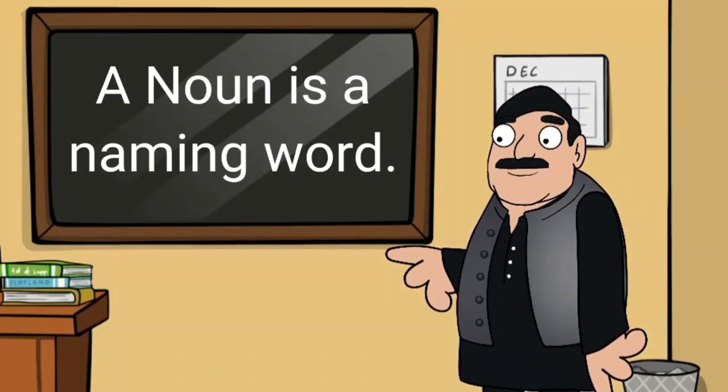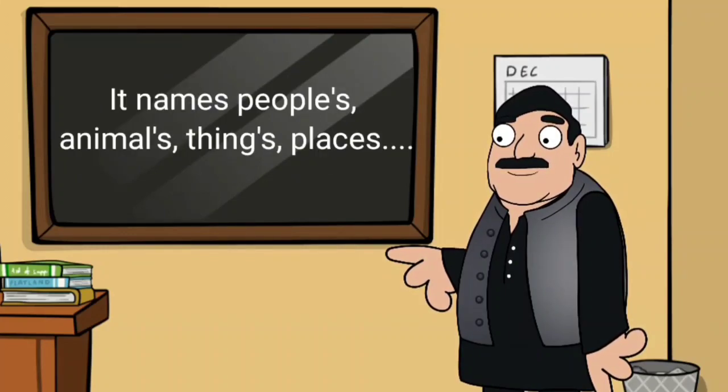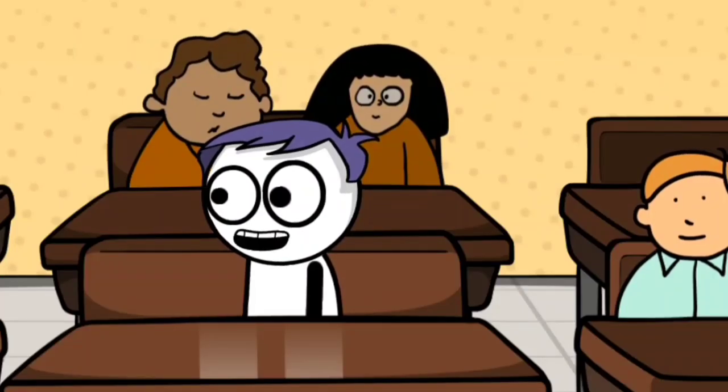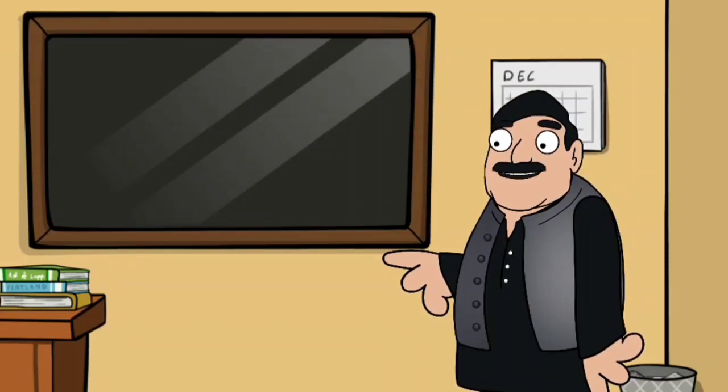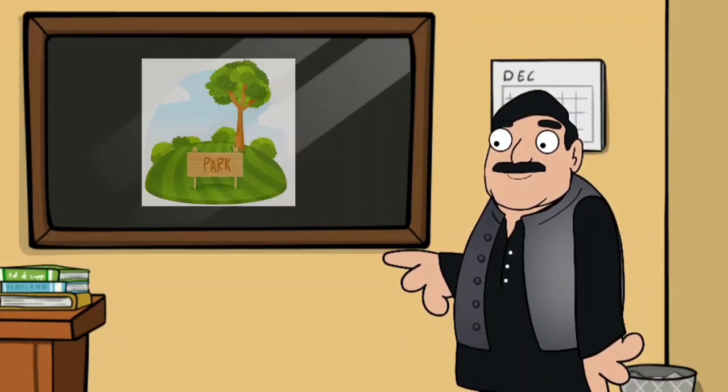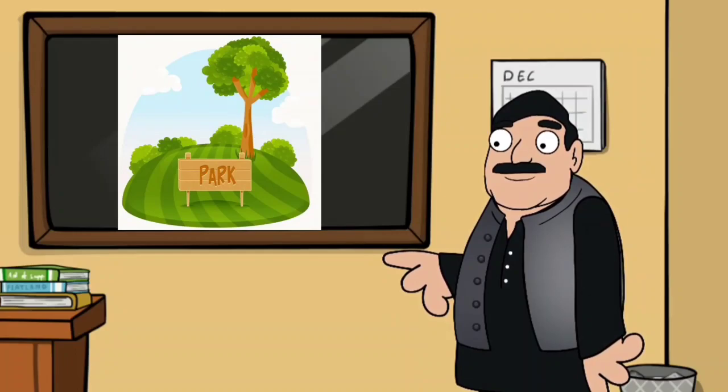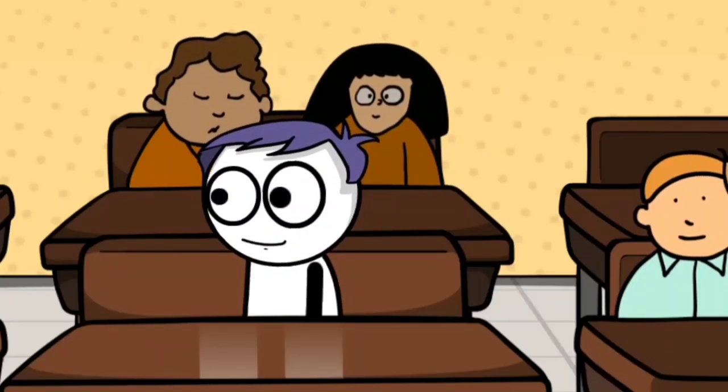That's right. A noun is a naming word. It names people, animals, things, places. Places? Yes. For example, park. Park is a name of a place. It's a noun. So, nouns are the names of people, animals, places, and things.